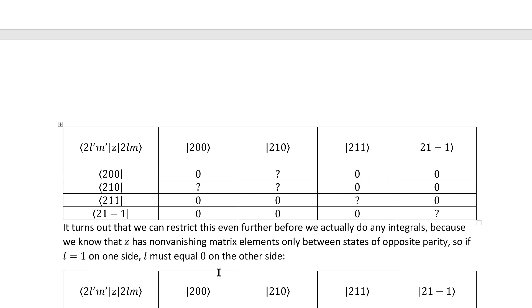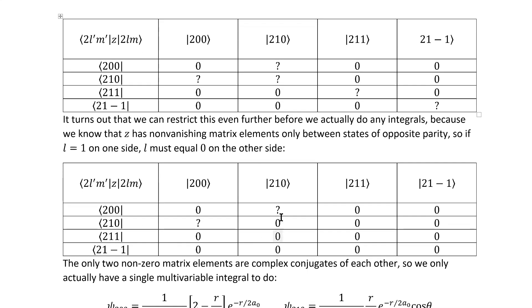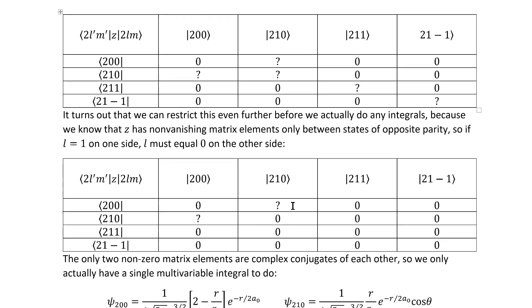So, L equal to one on one side and L equal to zero on the other side. That reduces the number of matrix elements we have to deal with to just two, at least directly.